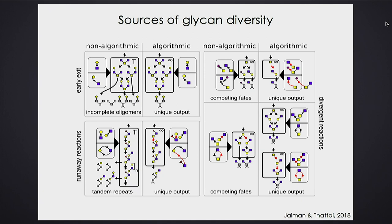The only way to make a well-defined final product is to somehow ensure this enzyme can only act once, and then only one other enzyme can act — for example by requiring a side branch. You have to break this loop: if you have a loop you're going to get diversity. There's another important source of diversity: competing fates. Here, two enzymes both attack the same substrate at the same carbon — if one enzyme acts, the other can no longer act. No matter what, this system has a branching reaction network with two terminal states.